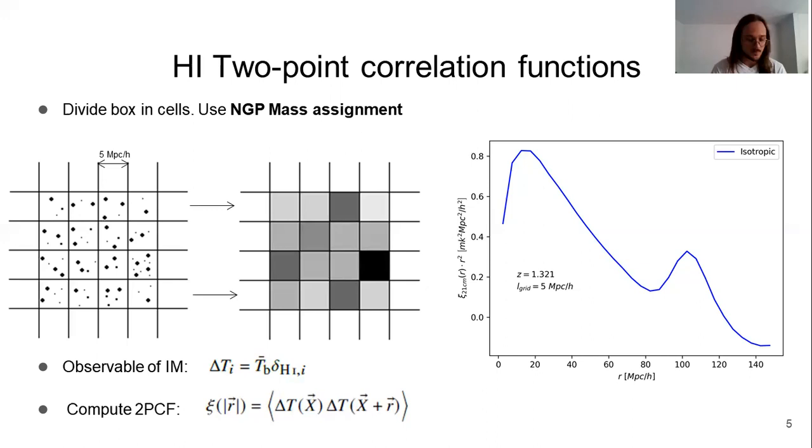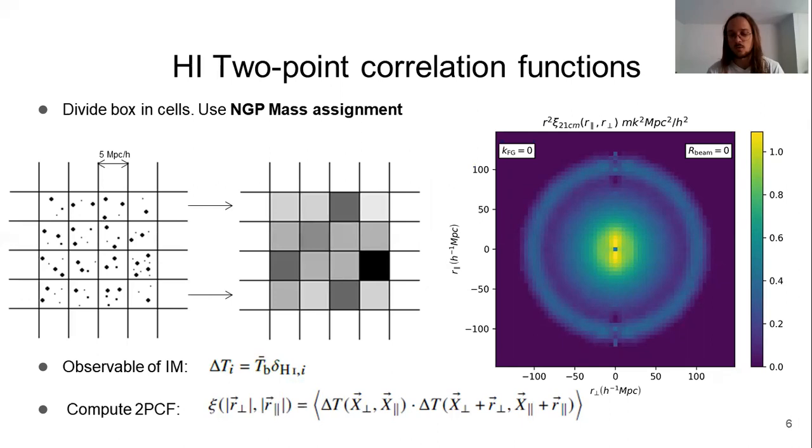And finally, we compute the two-point correlation function taking pairs. We have computed the isotropic one and also the anisotropic one that separates radial scales from angular scales. In fact, the last one will be very useful when we consider the observational effects, which is the next topic of this presentation.